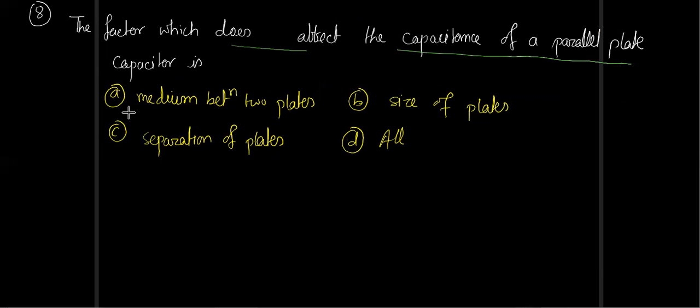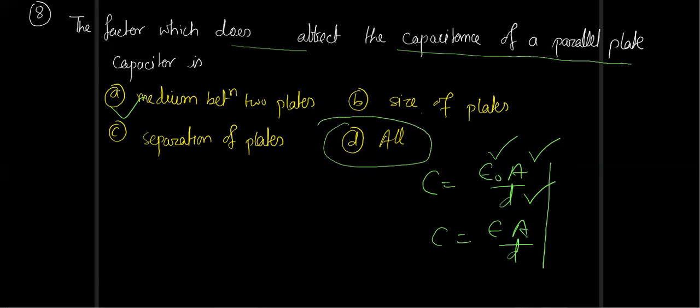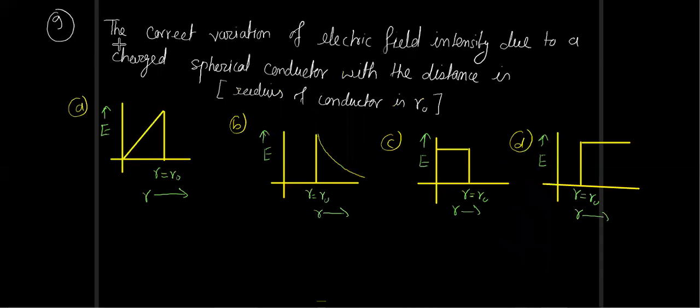Question eight: the factors which affect the capacitance of a parallel plate capacitor. The capacitance C equals epsilon A by d, where epsilon is the permittivity of the medium, A is the area, and d is the separation. It depends on the nature of medium, area of plate, and separation. So all are correct answers.